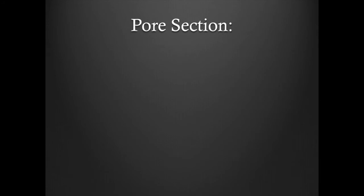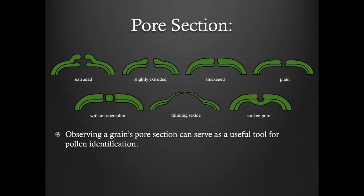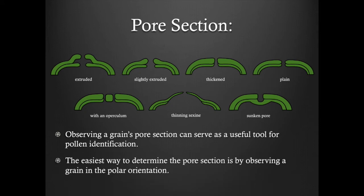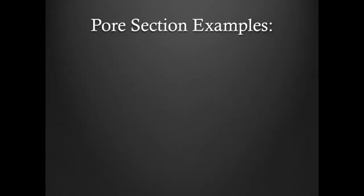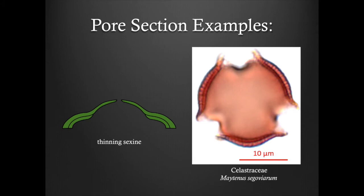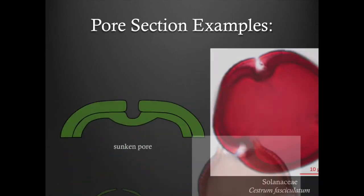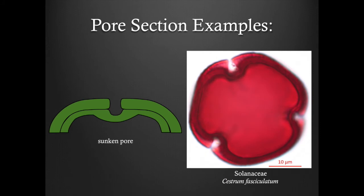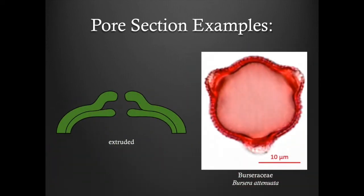Pore section. Observing a grain's pore section can serve as a useful tool for pollen identification. The easiest way to determine the pore section is by observing a grain in the polar orientation. Here are some examples of pore section: a pore section with an operculum, a pore section with a thinning sexine, a pore section with a sunken pore, and a pore section with an extruded pore.